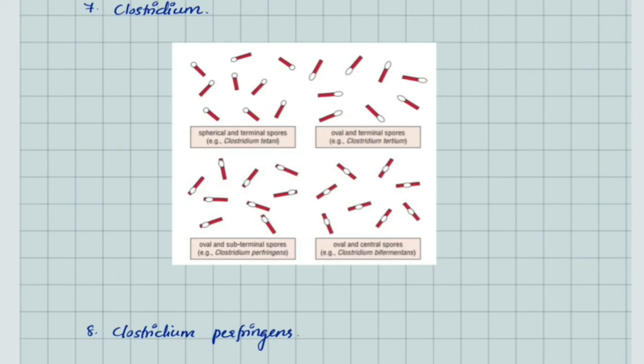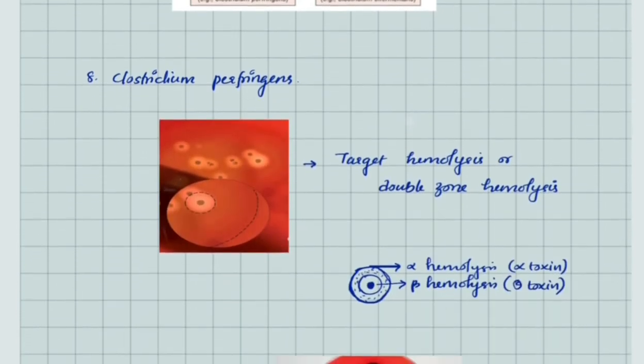Clostridium perfringens gives target hemolysis or double zone hemolysis in blood agar. At the center we see beta hemolysis due to theta toxin, and at the periphery we see alpha hemolysis due to alpha toxin.